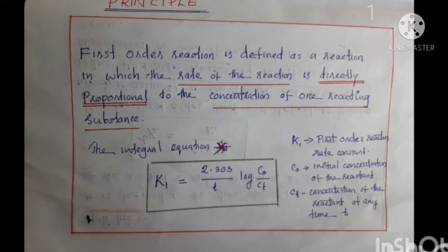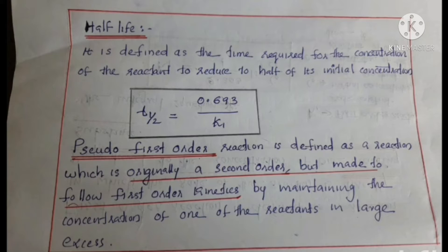C0 is the initial concentration of the reactant. Ct is the concentration of the reactant at time T. From the experimental data, you can calculate K1, the first order rate constant. Half life is defined as the time required for the concentration of the reactant to reduce to half of its initial concentration. The equation to calculate half life is: T½ equal to 0.693 divided by K1.